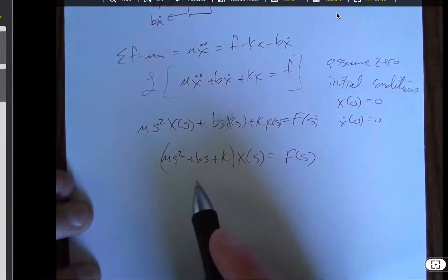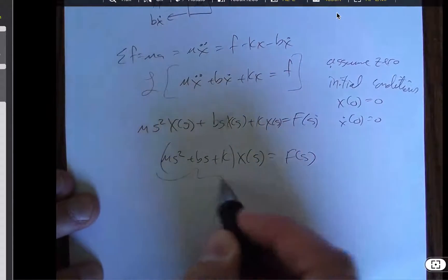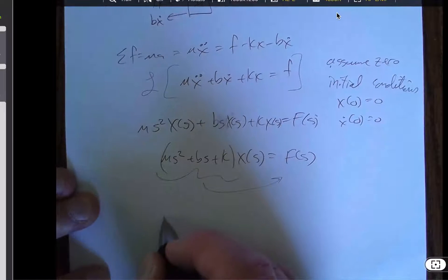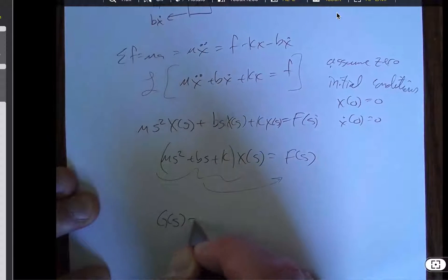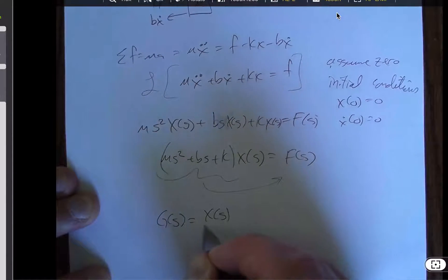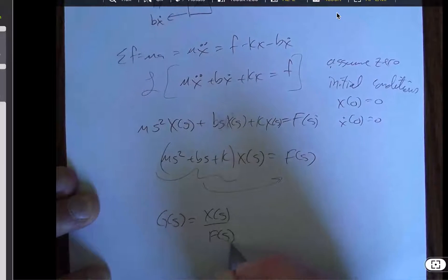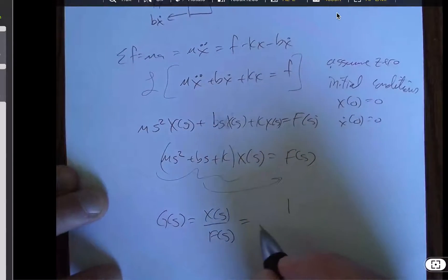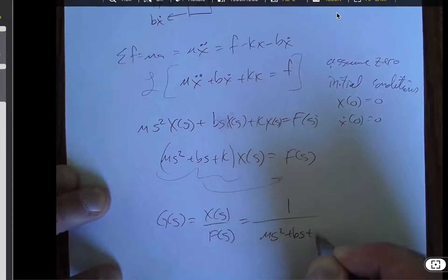And because I'm trying to find a transfer function, I'm going to divide this term across to the other side. And I get that g of s equals x of s divided by f of s, which is equal to 1 over ms squared plus bs plus k.